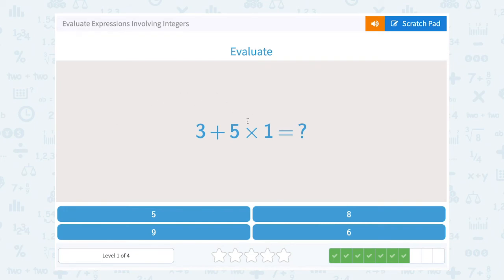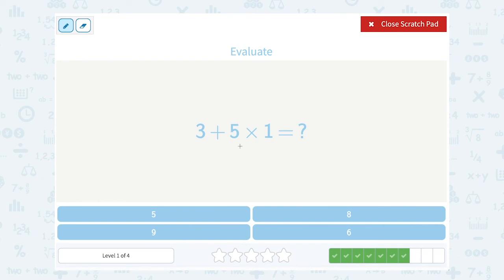3 plus 5 times 1. Thinking about my order of operations, I know I need to multiply before I can add. So I'm going to leave that 3 plus where it is, and I'm going to start by saying 5 times 1. That gives me 5, and now I can add 3 plus 5 to get 8.